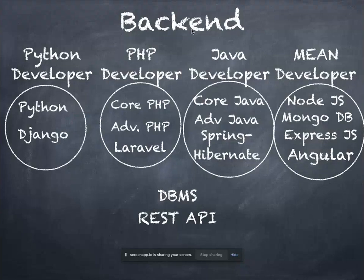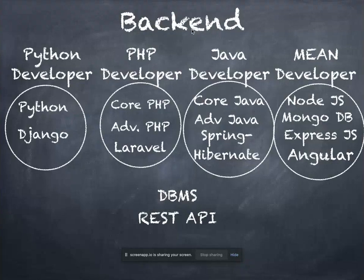To summarize the back end: we have Python development (Python + Django), PHP development (Core PHP + Advanced PHP + Laravel), Java development (Core Java + Advanced Java + Spring + Hibernate), and MEAN stack (Node.js + MongoDB + Express.js + Angular). DBMS goes with Python, PHP, and Java but not MEAN, since MEAN has MongoDB. REST API is included with everyone.